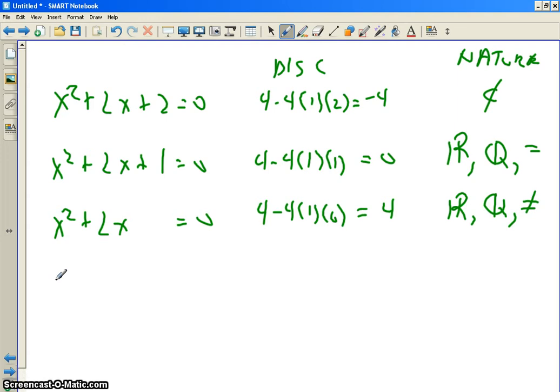But what if it's this? x squared plus 2x minus 1 equals 0. Then it's b squared is 4, minus 4 times a is 1, and c is negative 1. Now you got 4 plus 4 is 8. It's positive, so you don't get complex conjugates.